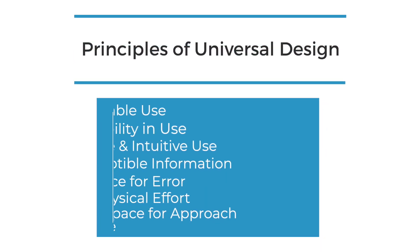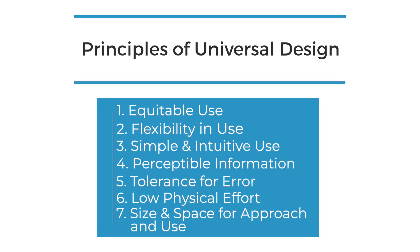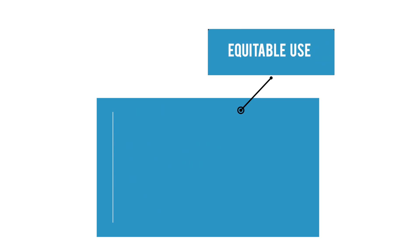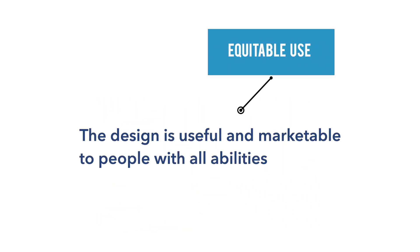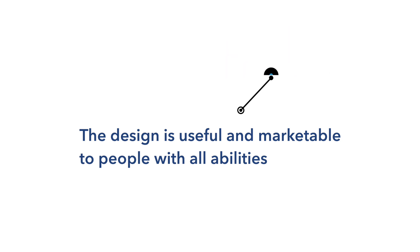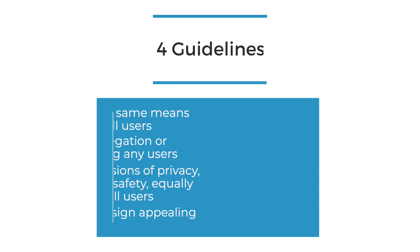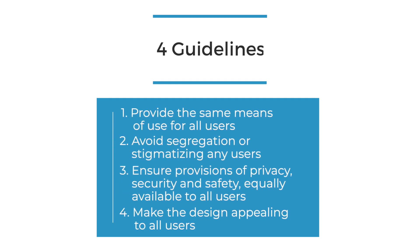There are seven different principles of universal design. The first of these is equitable use. Equitable use means a design must be useful and marketable to everyone. This principle brings attention to what we hope to achieve with universal design – inclusion. Along with the definition of the equitable use principle, there are four guidelines to ensure proper implementation.